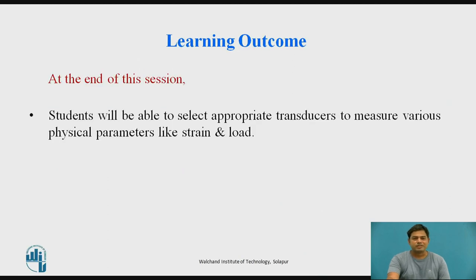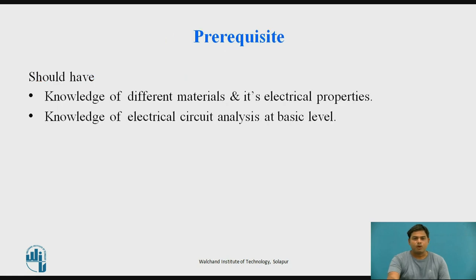At the end of this session, students will be able to select the appropriate transducer to measure physical parameters like strain and load. Before proceeding, the basic knowledge required includes electrical circuit analysis to solve electrical circuits, and knowledge of different materials — especially their electrical properties. For example, materials can be classified as insulators, metals, or semiconductors, and you should understand how resistance changes with changes in material properties.